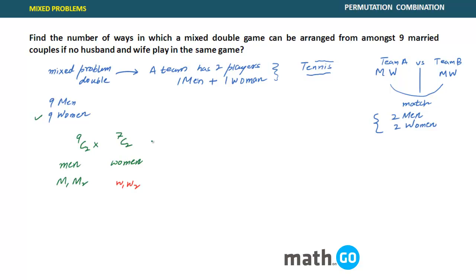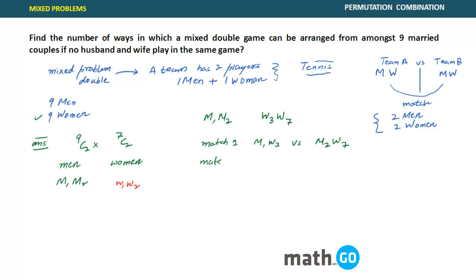So generally people say this is the answer — 9C2 × 7C2 — but this is wrong. Let me show you why. Say we picked M1, M2 for men and W3, W7 for women. Now, Match 1 could be M1-W3 versus M2-W7. But another match can be formed: M1-W7 versus M2-W3. So by the same set of people, we can have two kinds of matches. That means we multiply the number by two — this is the arrangement part.